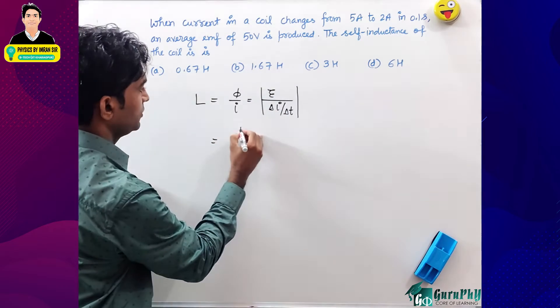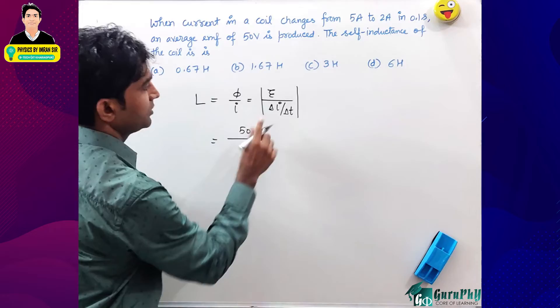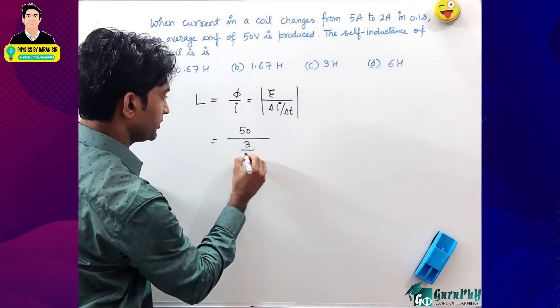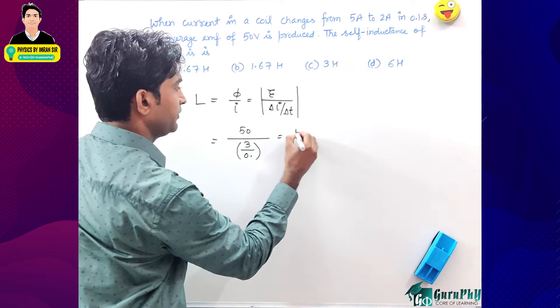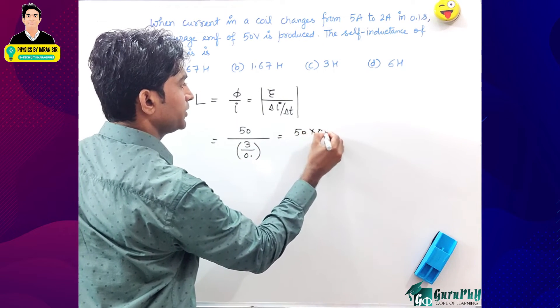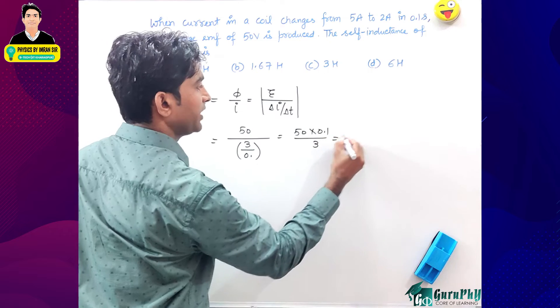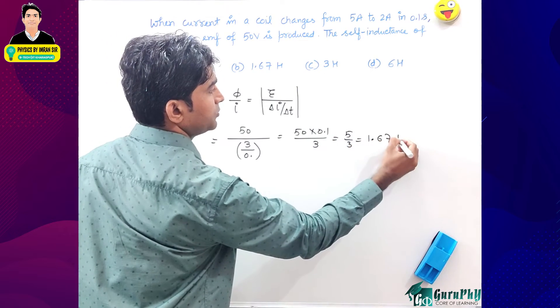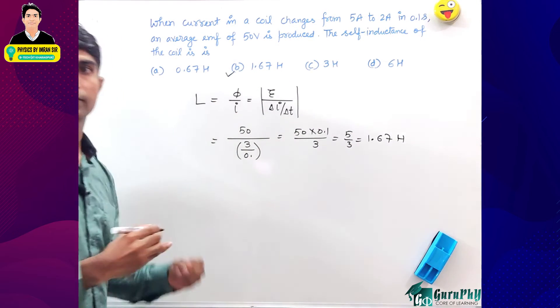So L equals 50 divided by the change in current—5 minus 2 equals 3—times the time interval 0.1. This gives us 50 times 0.1 divided by 3, which equals 5 by 3, or 1.67 Henry. Therefore, option B is not correct.